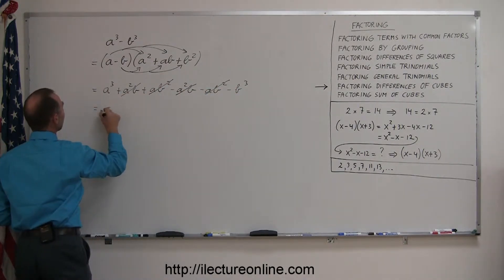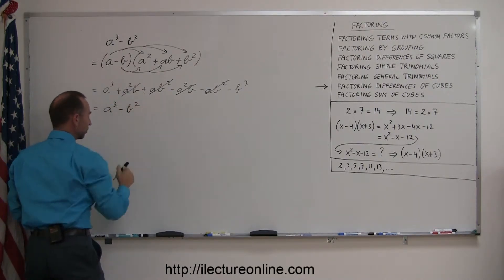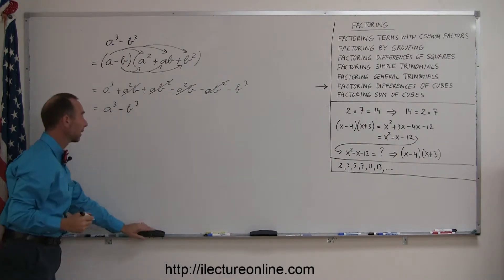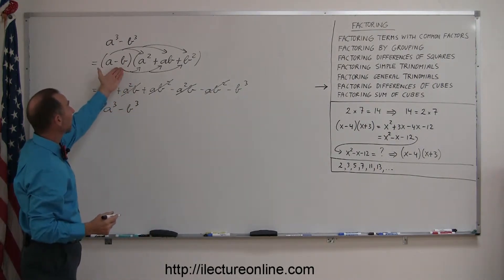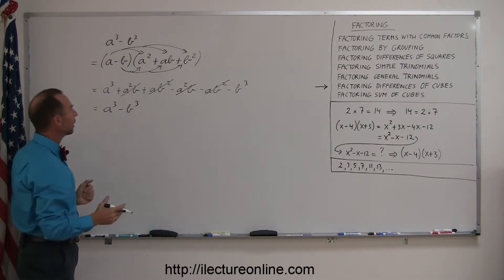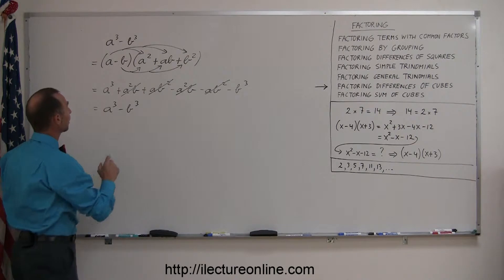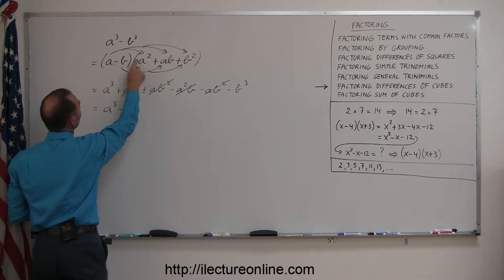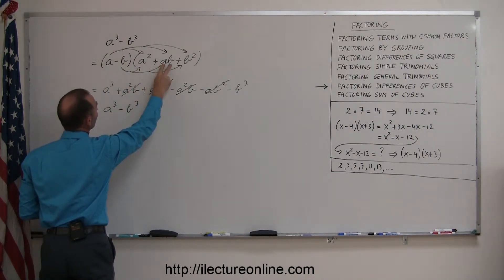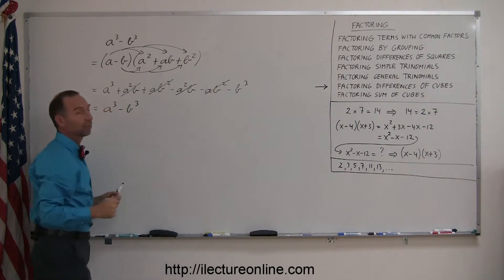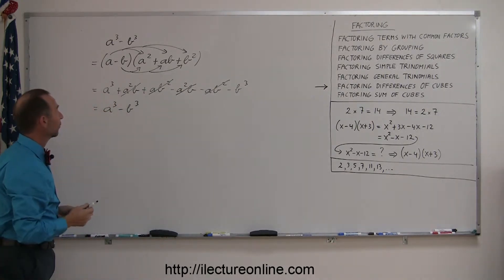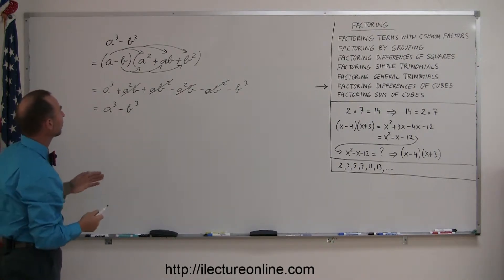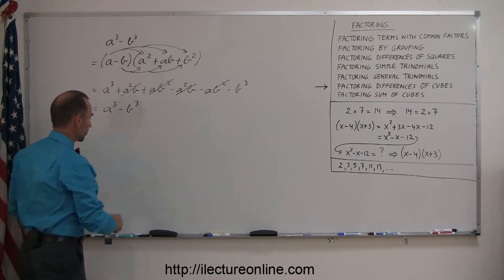And sure enough, we're left with A cubed minus B cubed. So I've just shown you that this is indeed the factored form. To factor the difference of cubes, you take each of the two terms, write them with a negative sign, then write the first term squared, the product of the two terms, and the last term squared. That's the factored form of A cubed minus B cubed.